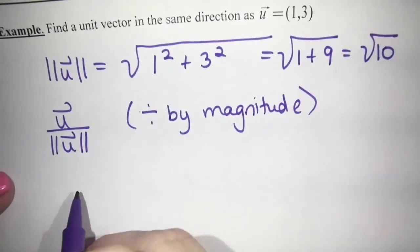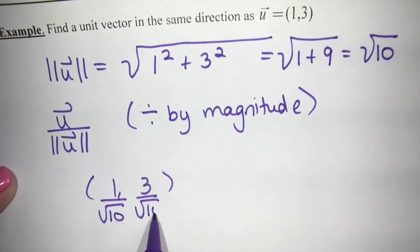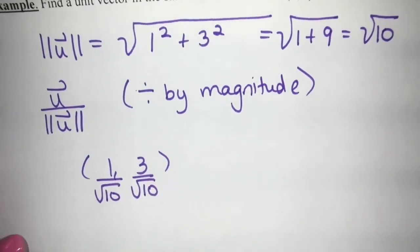So divide vector U by its magnitude. And so we take vector U is one and three, and we put them both over root 10. And that would be our unit vector.